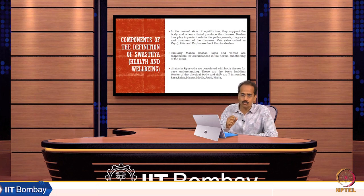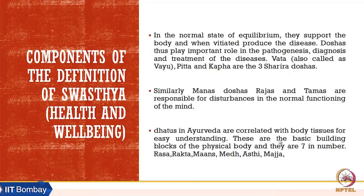Dhatus in Ayurveda are correlated with the body tissues. For easy understanding, we can say these are the basic seven building blocks of the physical body, and they are called rasa, rakta, mansa, medha, asthi, and majja.